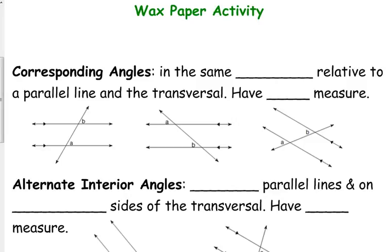It's for corresponding angles. Corresponding is almost like a word for — it means that it matches, they're the same. So corresponding angles are in the same position relative to a parallel line and the transversal. So on your paper there, you see several examples of what we call corresponding angles.